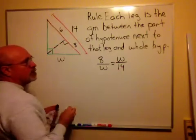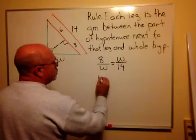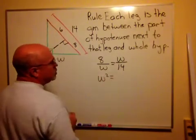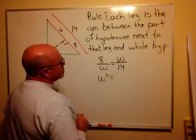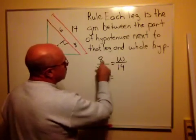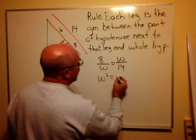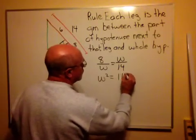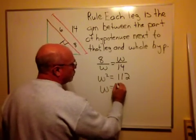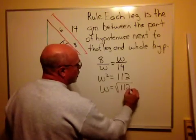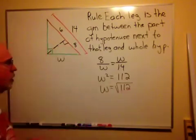If I cross multiply here, I'm going to get W squared is equal to 8 times 14, and let's see, that's 32 plus 80, that's 112. So W will be the square root of 112.